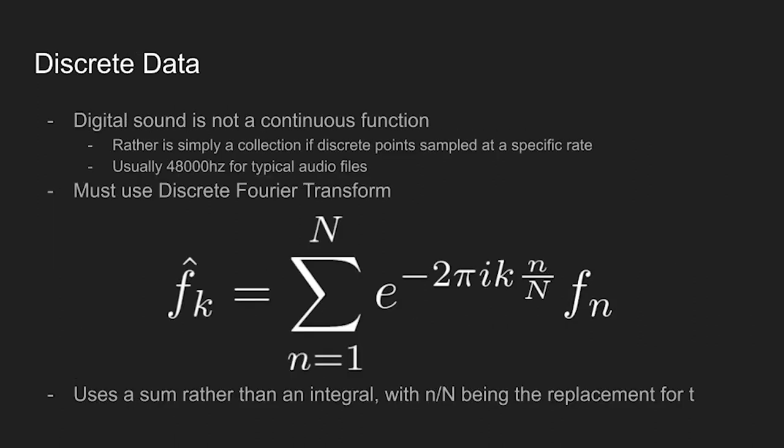However, when we're dealing with audio, especially digital audio, it's not a continuous function. And rather, it's just a collection of discrete points sampled at one specific rate. Usually that rate is around 48,000 hertz if it's a typical audio file. Sometimes it's a bit higher, sometimes a bit lower. But usually that's the standard.